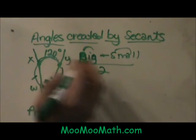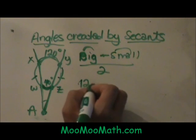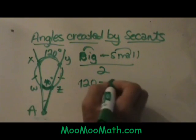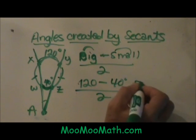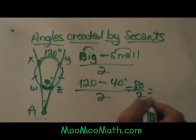So let us plug in some numbers. The larger arc is 120. The smaller arc is 40. I am going to subtract those to get 80 and divide by 2. So this angle A is 40 degrees.